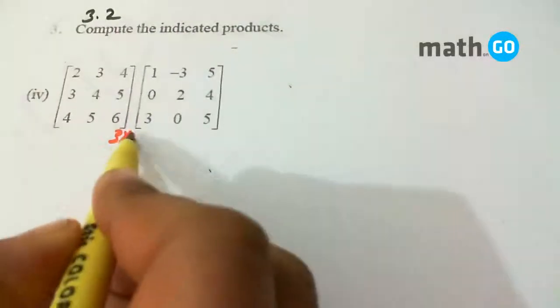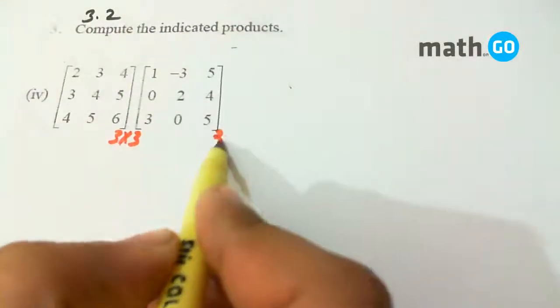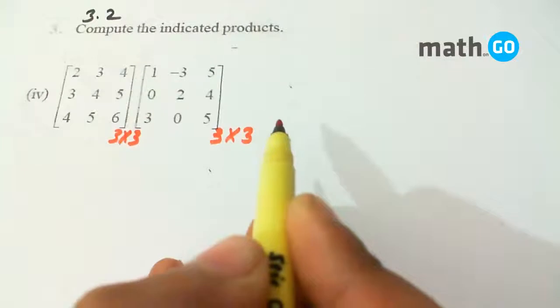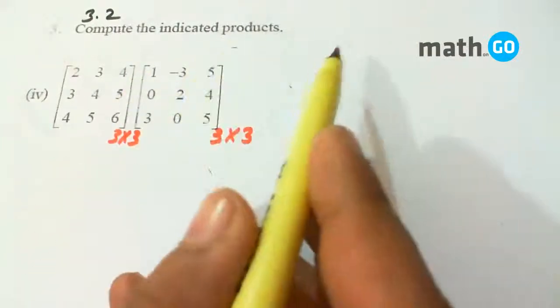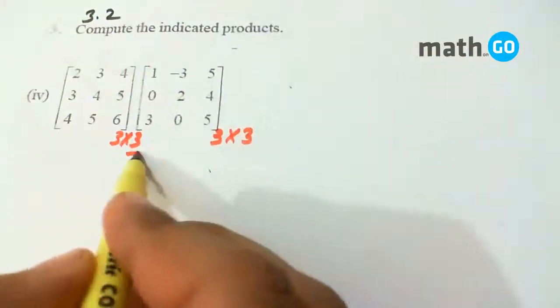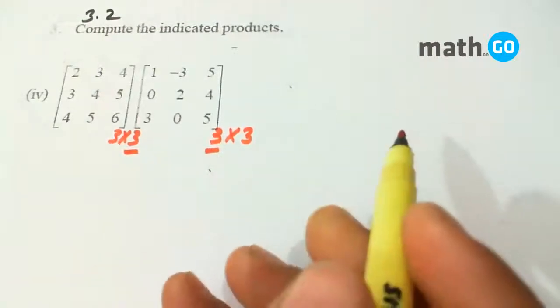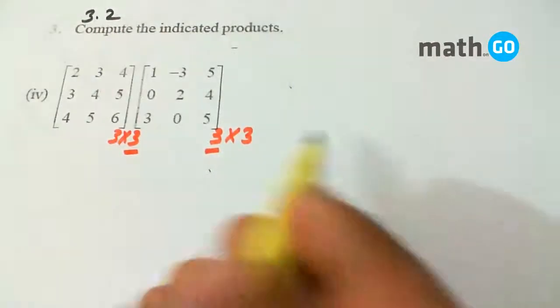Suppose this is 3 x 3 and 3 x 3 as given. Now for the product to exist, this should be equal to and the product is calculated as...